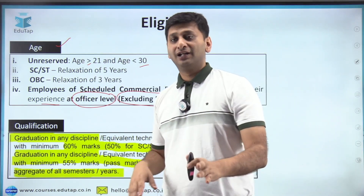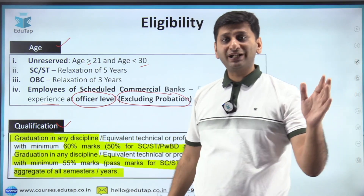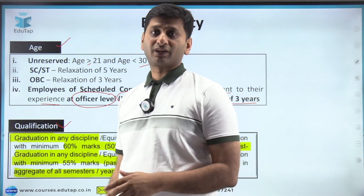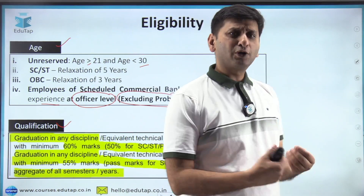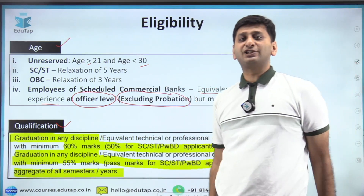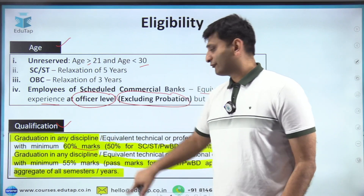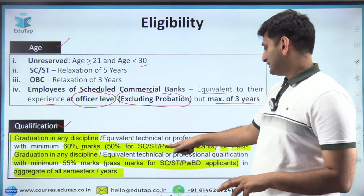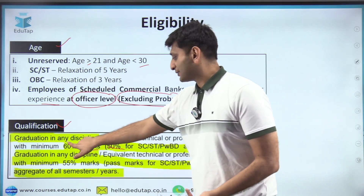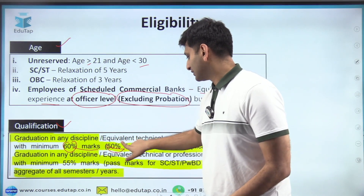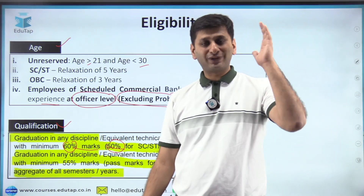For qualification, you need to be a plain graduate in any field — pharma, hotel management, architecture, agriculture, anything — with 60 percent marks for the unreserved and OBC category. For SC/ST and PwBD, 50 percent is required. Note that OBC does not get relaxation here; they also need 60 percent.